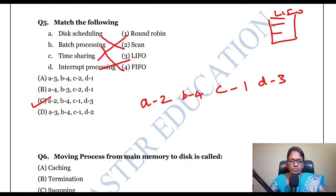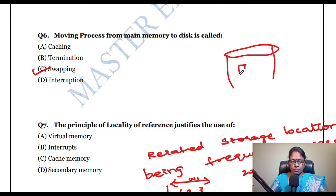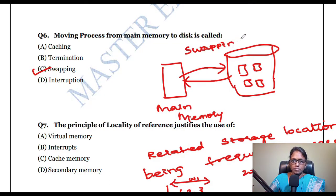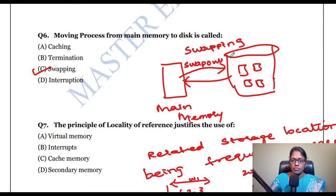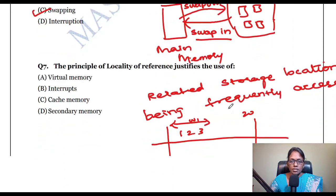Next question: moving a process from main memory to disk is called swapping. From main memory to virtual memory (the larger disk), these two processes are called swapping. Swap out is moving from main memory to virtual memory. Swap in is bringing from virtual memory back to main memory.